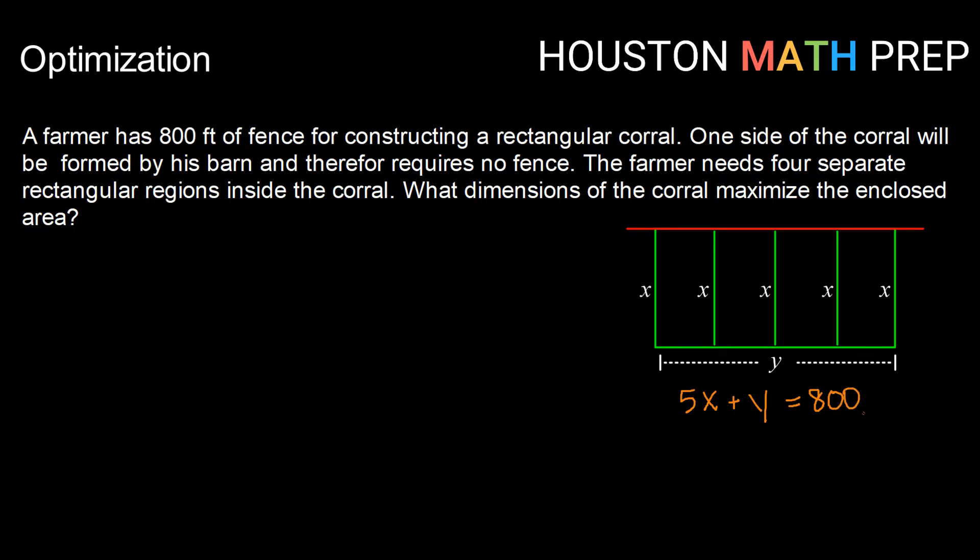and that needs to add up to 800 feet of fencing. So this is what we would call our constraint. This is what we have to work within. Now we want to think about what is it that we want to optimize. In this case, we want to make a maximum area. So we know the area formula for a rectangle is x times y in this case, or length times width.